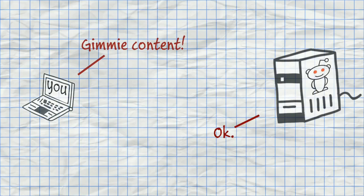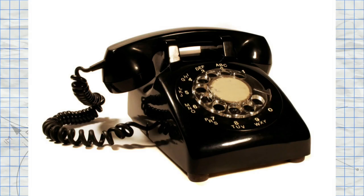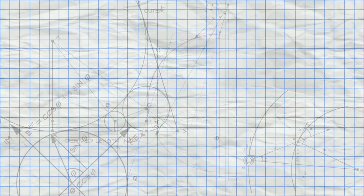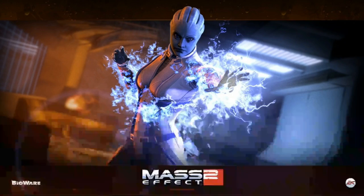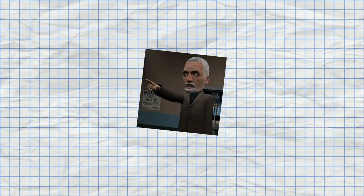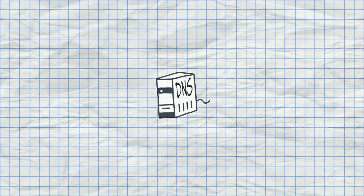Most people aren't even aware this is going on. If you're old enough to remember using your rotary telephone to call directory assistance — giving the operator a name and getting back a phone number — then this is the same idea. If you're too young to remember that, think of it like space magic or something.